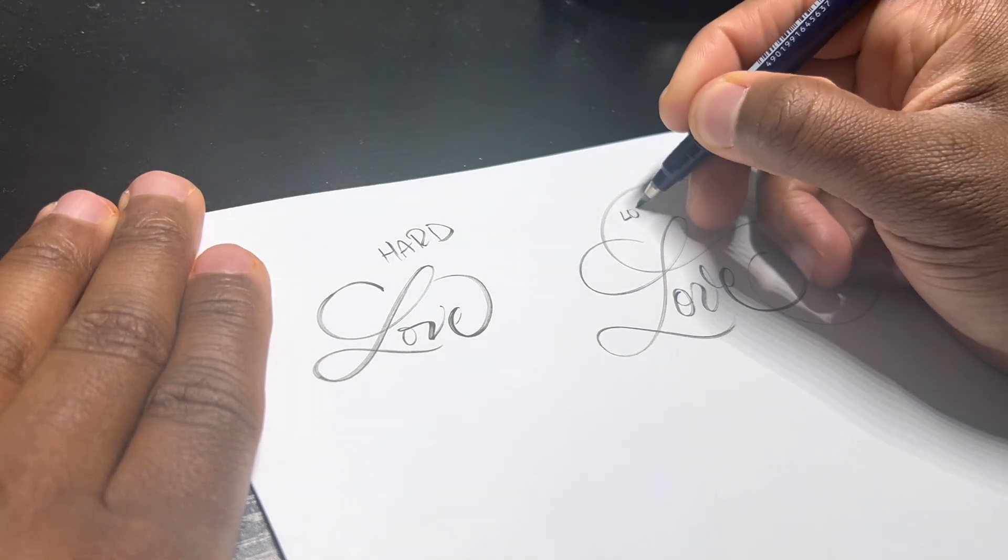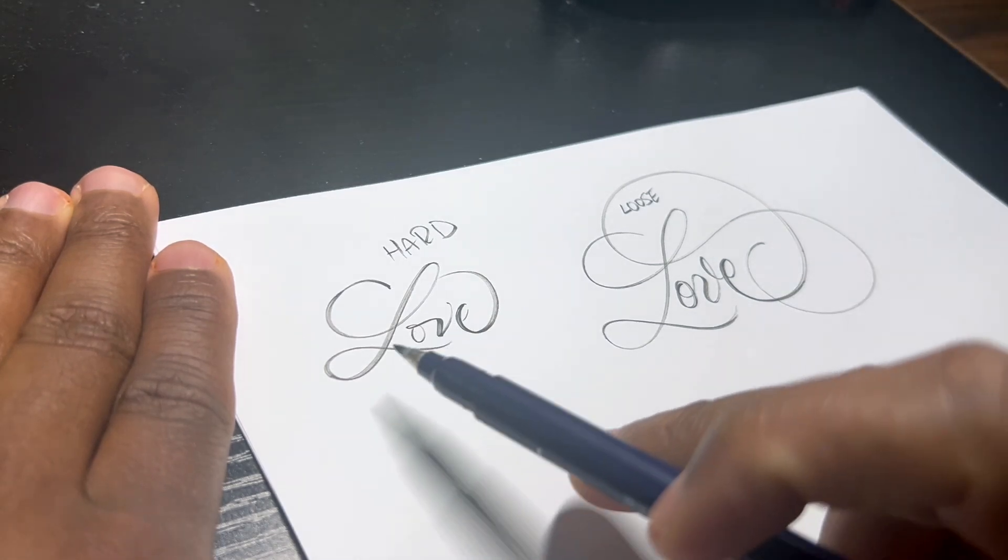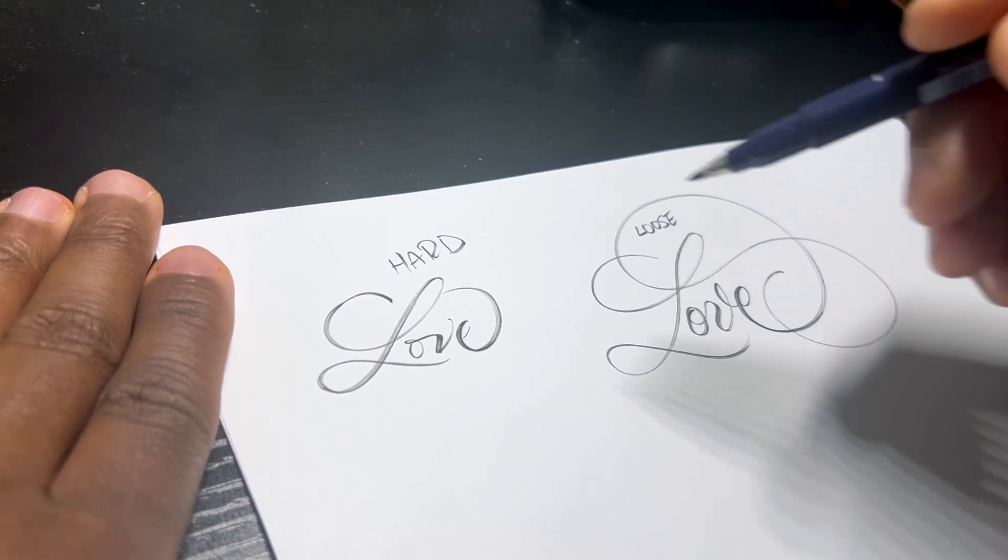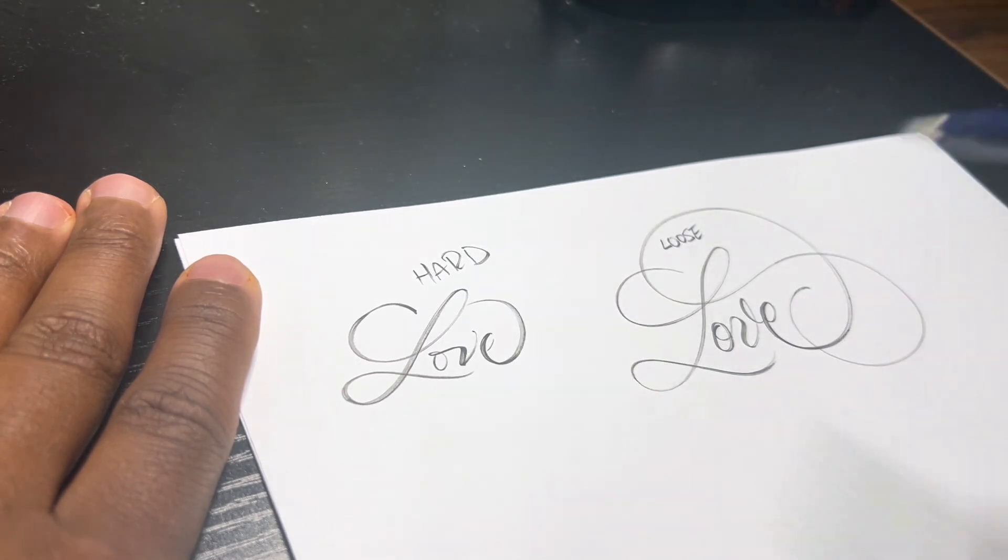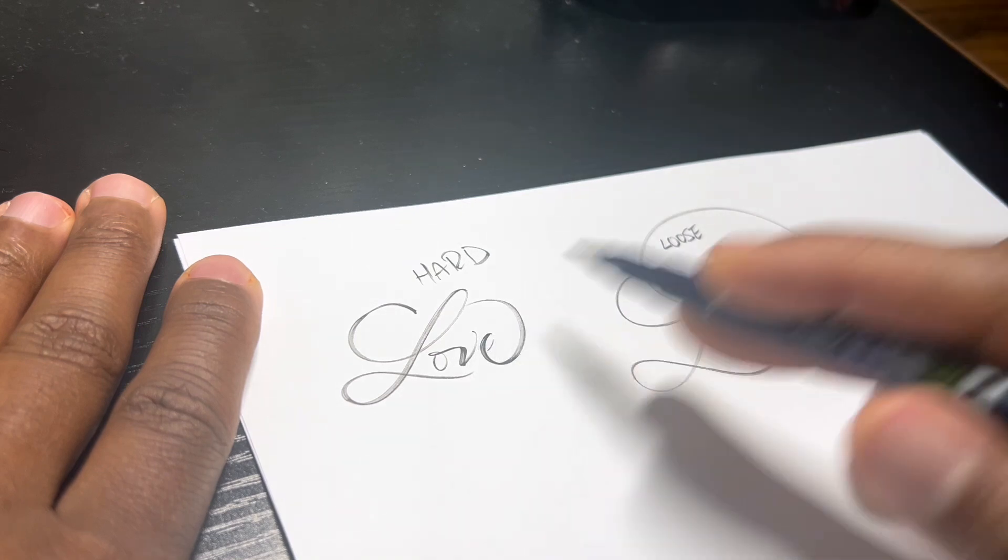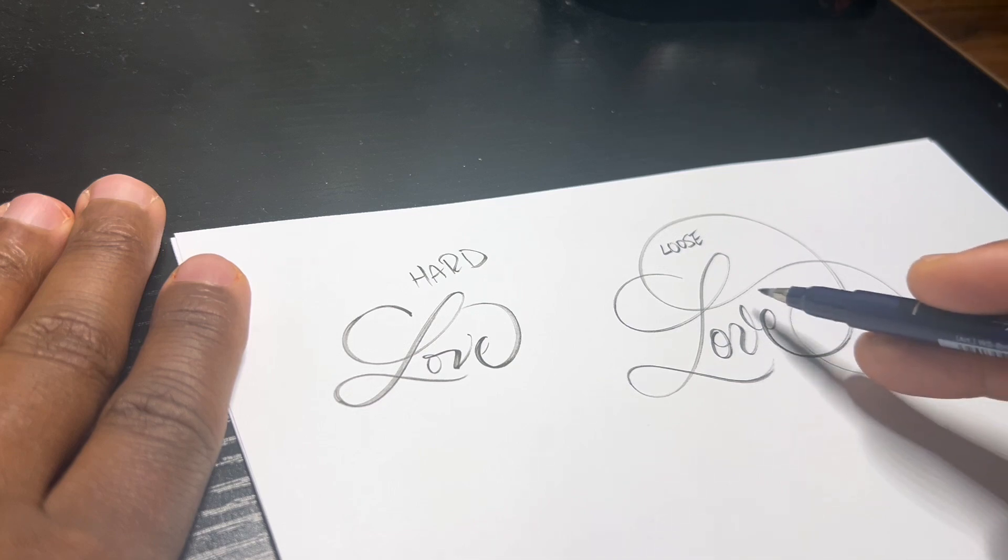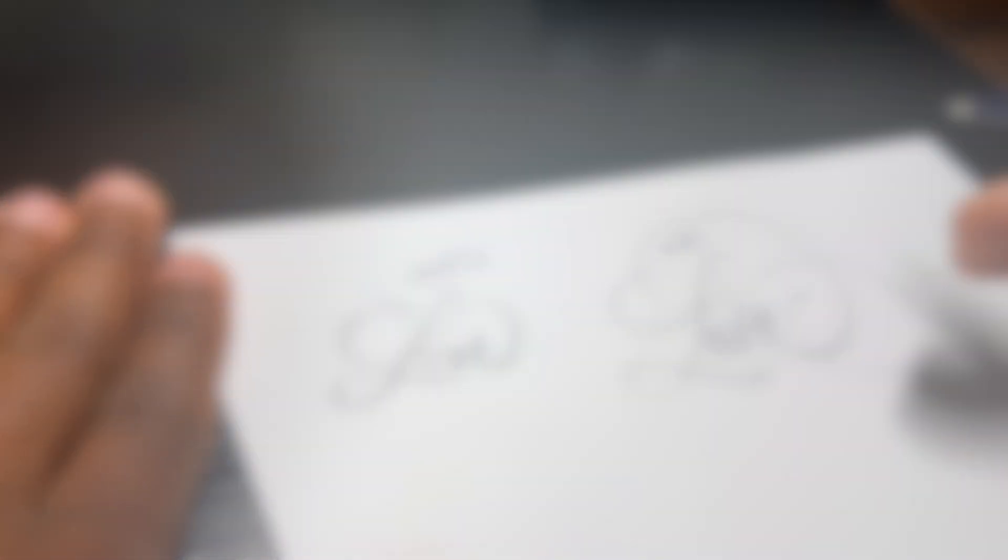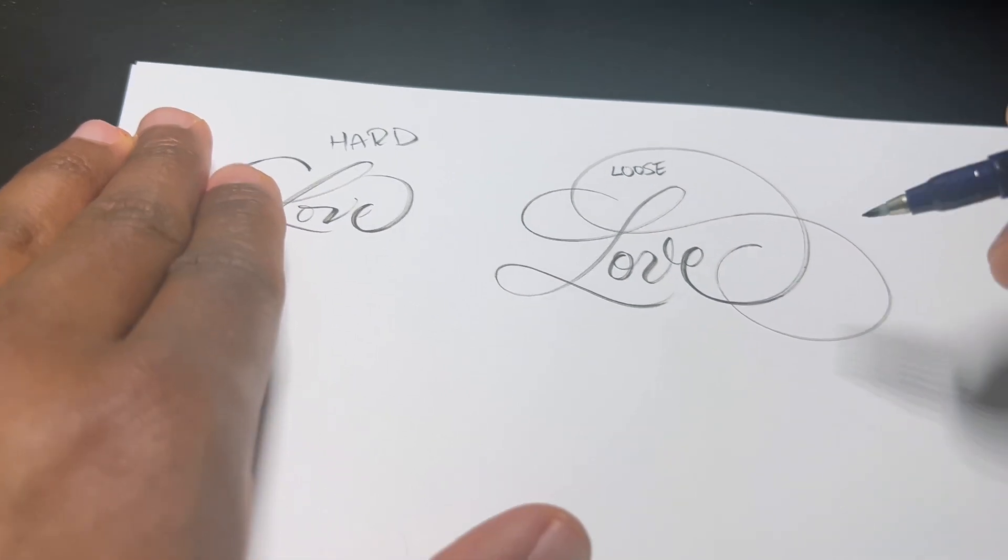This is a loose grip. There are pretty drastic changes you can see. If you see here with the L, this L is a lot heavier. And then with the O and the V connection compared to this one, which is a lot more fluid and has a lot more flow to it. It's not as constricted.